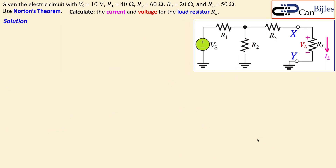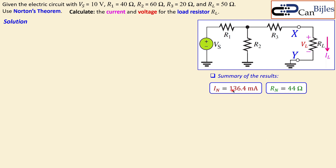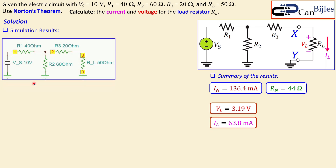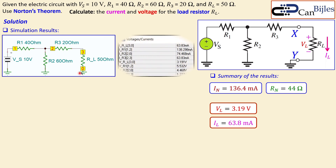To summarize: the Norton current is 136.4 mA, Norton resistance is 44 ohms, load voltage is 3.19 V, and load current is 63.8 mA. We can also simulate the original circuit directly in SPICE without the equivalent circuit. The simulation table shows 63.8 milliamps for the load current — just a small difference due to rounding errors.